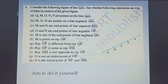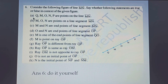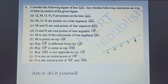Question number 6 says: consider the following figure of a line MN. Say whether the following statements are true or false. Here is a figure of a line with 5 points: Q, M, O, N, P. Part A states that Q, M, O, N, P are points on the line MN. The line MN extends from one end to the other, and on this line we have all the points Q, M, O, N, P. So all these points lie on line MN — this is true.